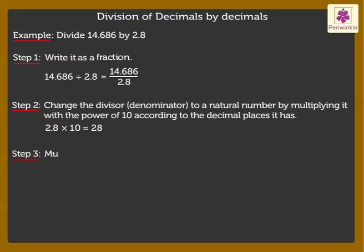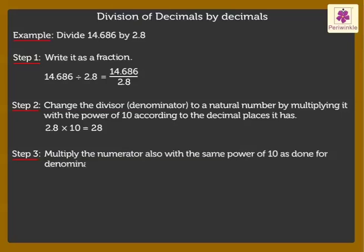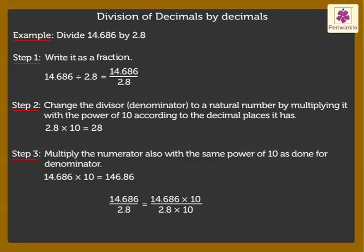Step 3: Multiply the numerator also with the same power of 10 as done for the denominator. Thus, we get 14.686 × 10 = 146.86. When we multiply the numerator and the denominator by the same number, we get the equivalent fraction.